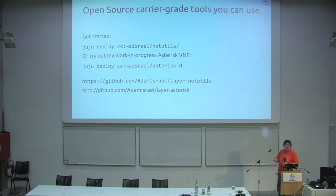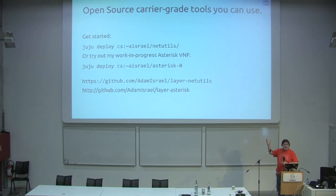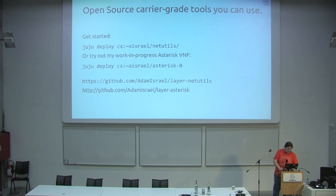If you want to get started, there's a net utility VNF that is basically a packaging of a bunch of common net utilities — Nmap, ping, traceroute — things you might want to run inside a remote network service. And if you're interested in Asterisk, there's a work in progress here. I'll do a little demo of creating a VNF for Asterisk so you can deploy your PBX to physical hardware, the cloud, wherever you need it. If you want to set up a polling system or voicemail, you can just deploy that and then scale as necessary.